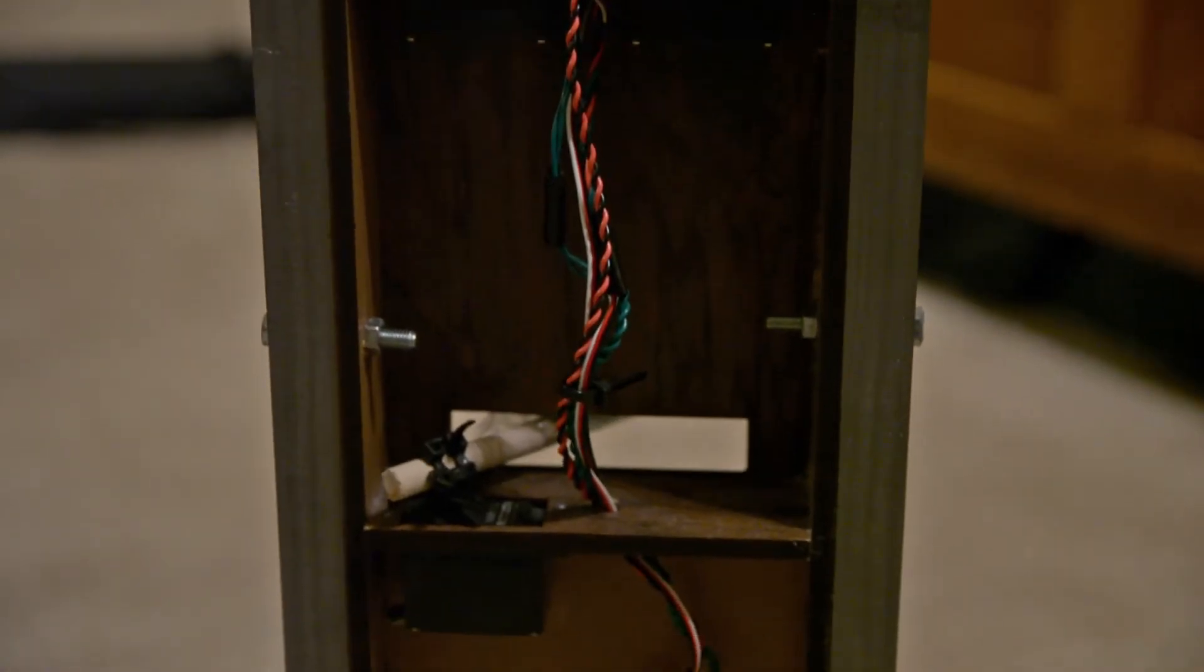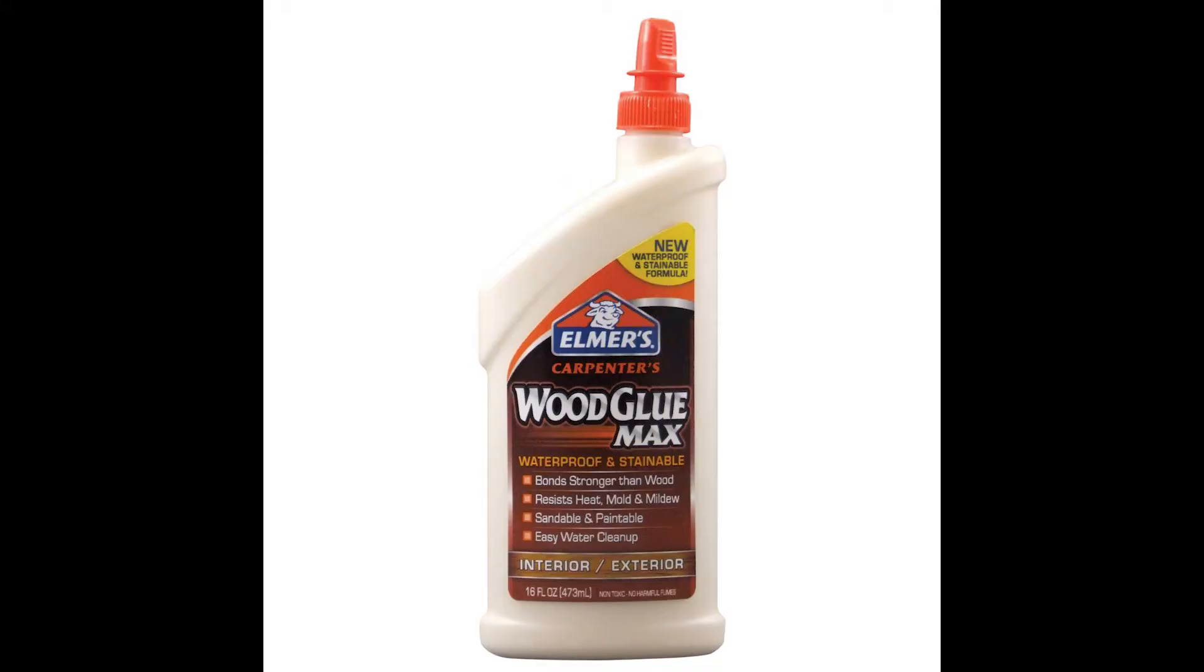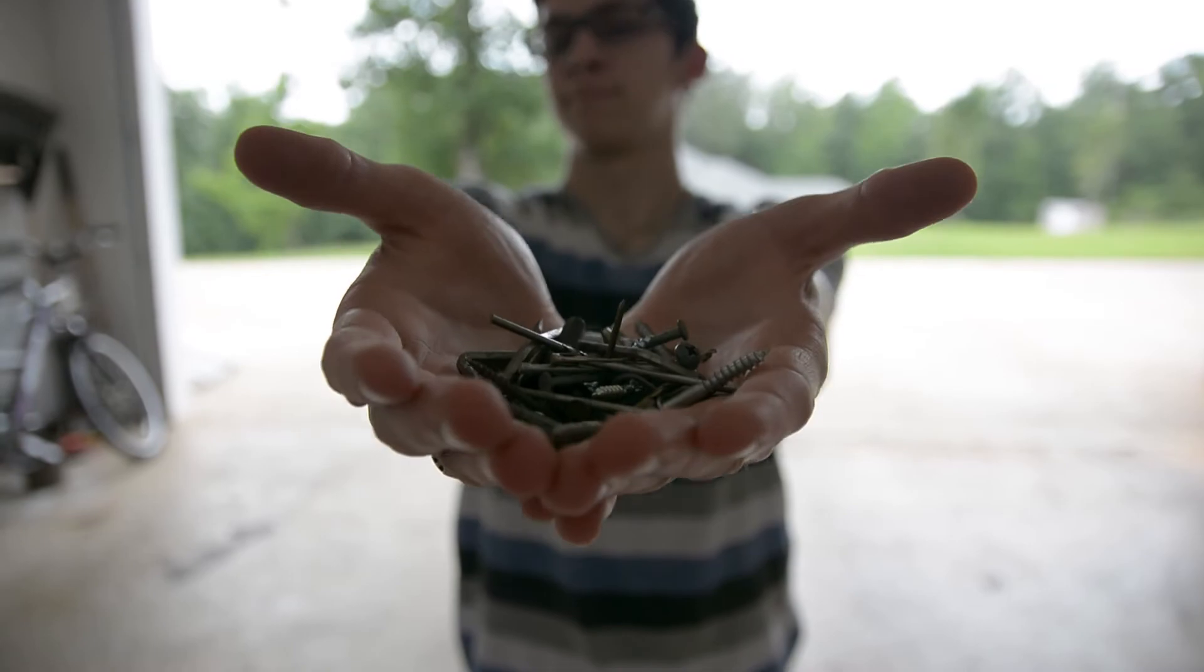Not only will your toilet paper be automatically replaced, but this product can hold up to eight rolls at once. Constructed from only the highest quality wood flooring and the latest wood glue from Lowe's, along with all kinds of screws, this cabinet-shaped system will not disappoint.